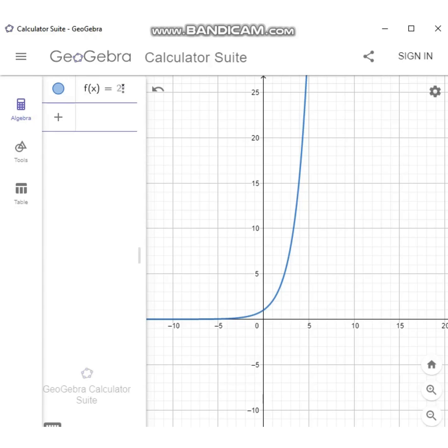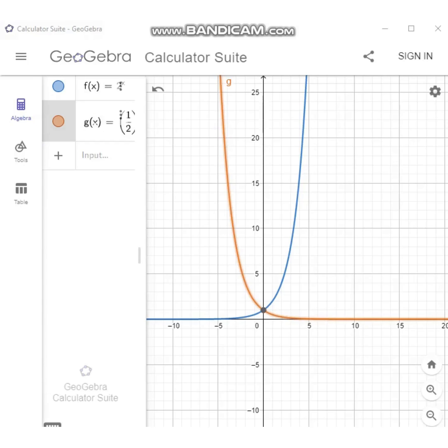Suppose we have 1/2 or one-half raised to x. Notice that the shape is similar to the shape when b is greater than 1, but this time, the graph gets closer to the x-axis when x is greater than 0 rather than when x is less than 0. This is exponential decay.